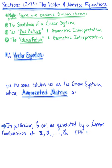Welcome back. Sections 1.3 and 1.4 are exploring the vector equation and the matrix equation, respectively. These two topics go so much hand in hand that I'm combining them together into one section. There are three major ideas we are going to be exploring together. The first one is the breakdown of a linear system — showing how the linear system of equations is equal to the vector equation is equal to the matrix equation.